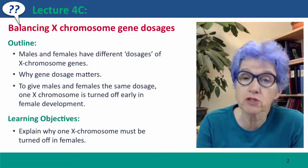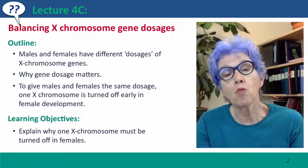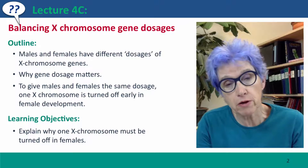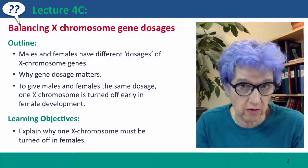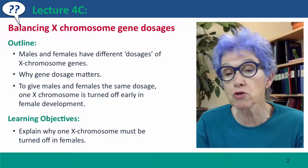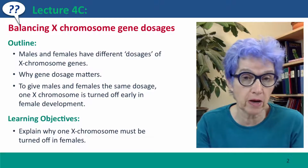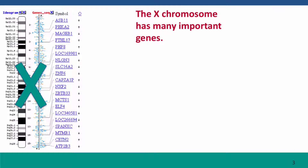To give males and females the same dosage, mammals carry out a process called X inactivation, where one of the X chromosomes is turned off early in female development. The X chromosome has many important genes — genes for a lot of different functions.